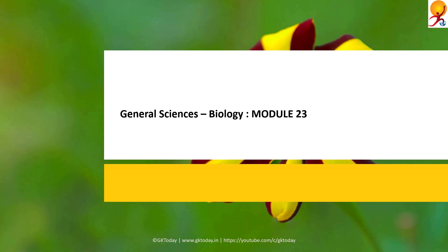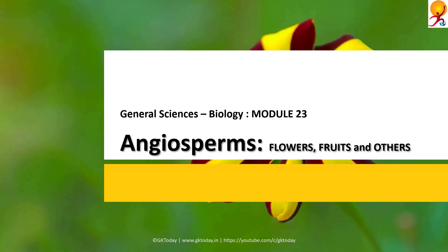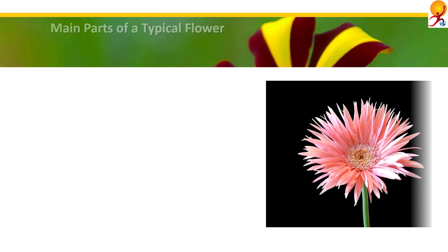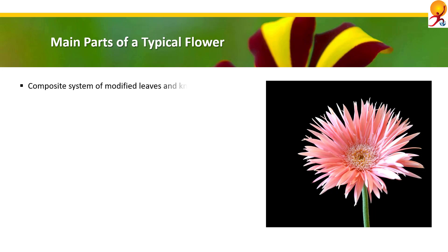Hello everyone, welcome to General Science Biology Module 23. Today's lesson is on angiosperms: flowers, fruits, and others. I'm Ritrisha from GK Today and I'll be taking you through this. Starting off with flowers: a flower is a composite system of modified leaves and nodes which directly participates in reproductive activities and produces fruits and seeds.